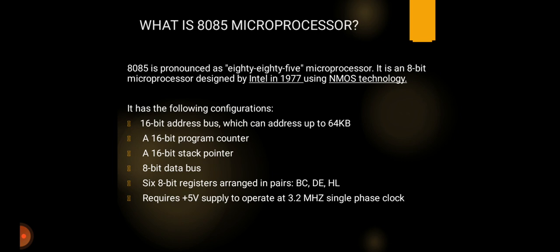The first topic is: what is the 8085 microprocessor? The 8085 is an 8-bit microprocessor designed by Intel in the year 1977, using NMOS technology. NMOS technology stands for N-channel metal oxide semiconductor, and this technology is used in microelectronic circuits for logic and memory chips and in complementary metal oxide semiconductor (CMOS) design.